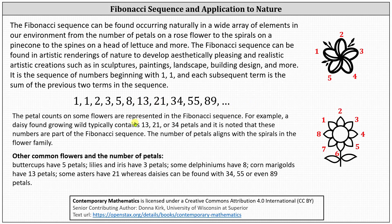The petal counts on some flowers are represented in the Fibonacci sequence. For example, a daisy found growing wild typically contains 13, 21, or 34 petals, and it is noted that these numbers are part of the Fibonacci sequence. The number of petals aligns with the spirals in the flower family.